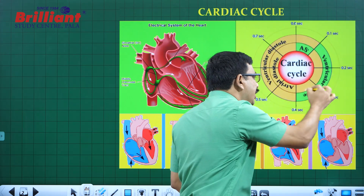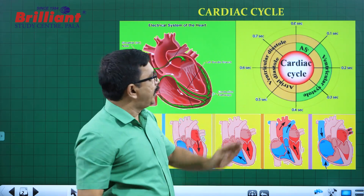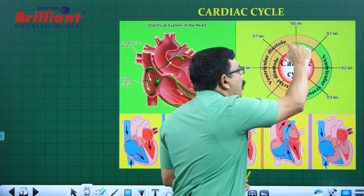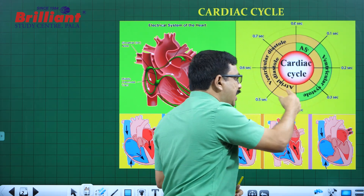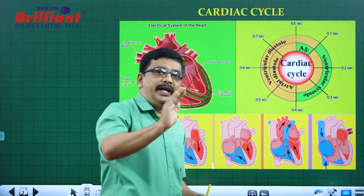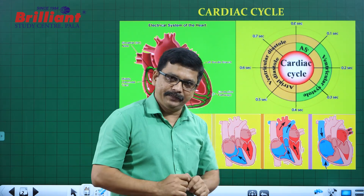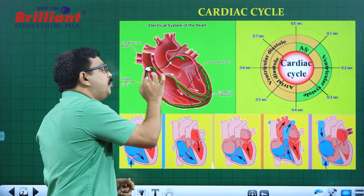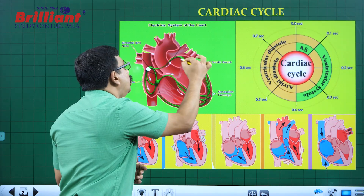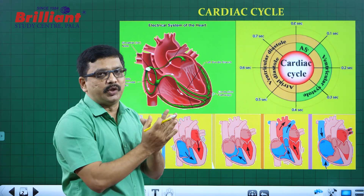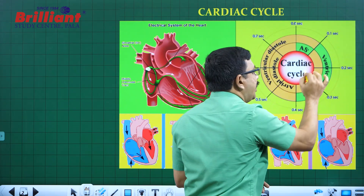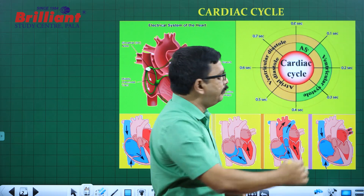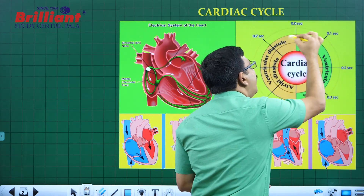In that 0.8 seconds, there is a diagrammatic representation of the cardiac cycle. We have the cardiac cycle represented as 0.8 seconds total. This is the first event. There are two cycles in the representation: the inner circle represents atrial events, and the outer circle represents ventricular events.